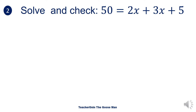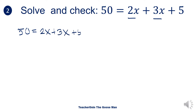Let's have another example. We have 50 is equal to 2x plus 3x plus 5. The very first thing we will do is combine similar terms — meaning I'll add 2x and 3x together. So rewriting, we have 50 is equal to the sum of 2x plus 3x plus 5, which gives us 50 is equal to 5x plus 5.